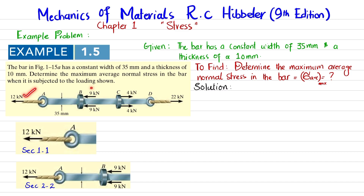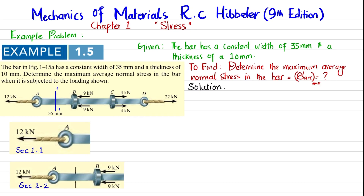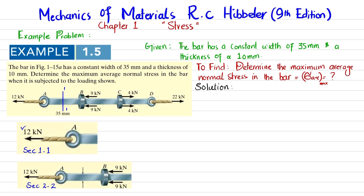We will take a section at each portion of the bar's length and find the maximum load acting within that section. First, we section it at section 1-1. When you cut at section 1-1, the 12 kilonewton load is acting at this point, so in order to balance it we have a 12 kilonewton load acting in the opposite direction. Therefore P_AB is equal to 12 kilonewtons.